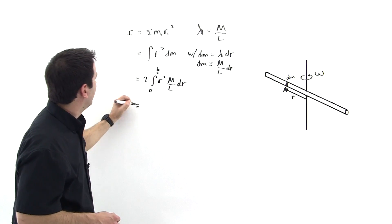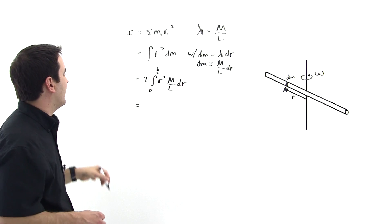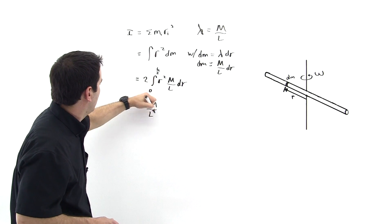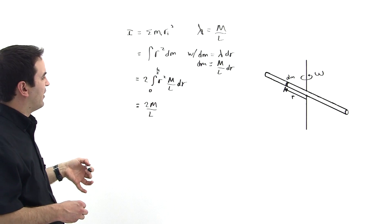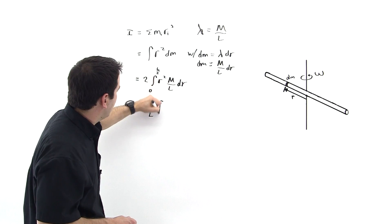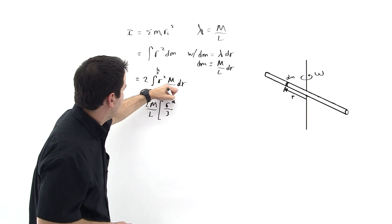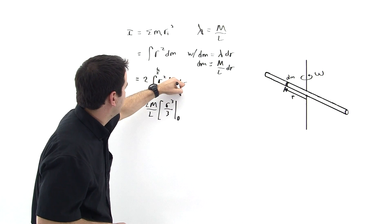Okay, so then let's factor out the constants, m over l. So we have 2m over l. And then we have the anti-derivative of r squared. So the anti-derivative of r squared is r cubed over 3, evaluated from 0 to l over 2.